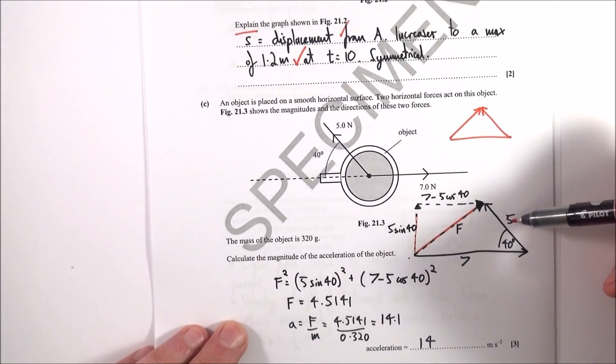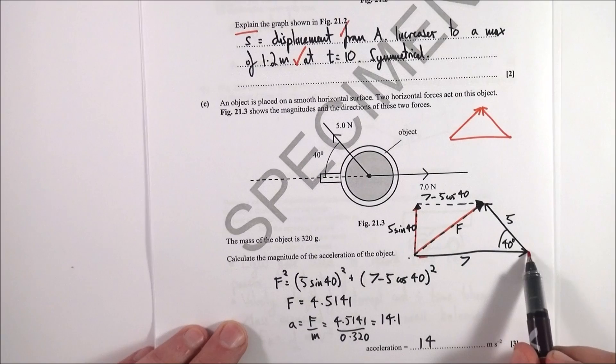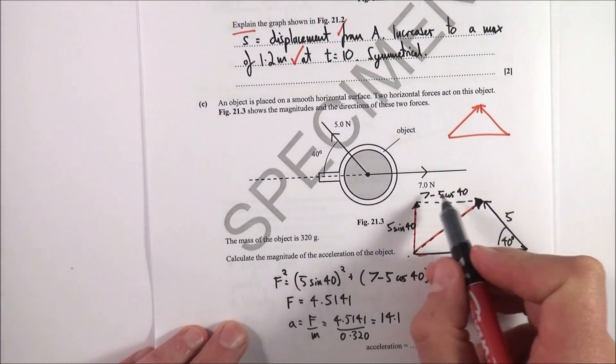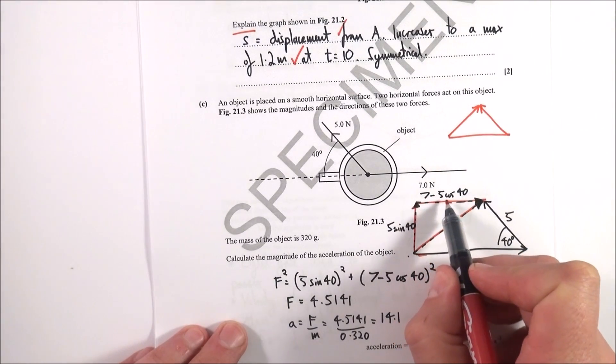Which is going to be equal to 5 times sin 40 to give the length of this side here. And then this side here is equal to 7 this way minus 5 cos 40 over here. So the length of this side here is equal to 7 minus 5 cos 40.